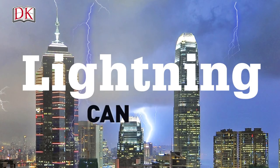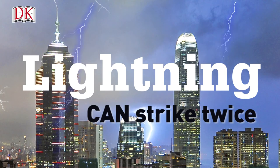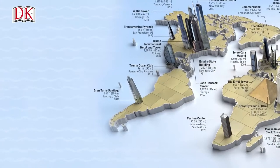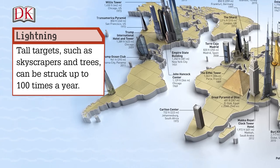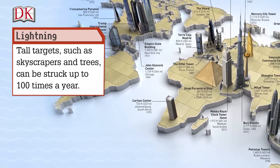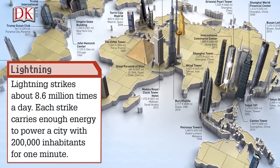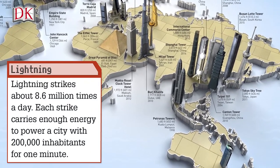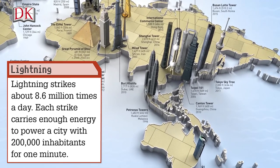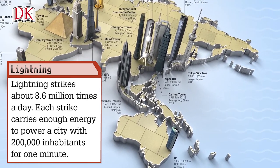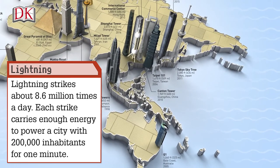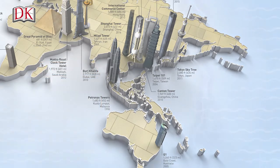Lightning can strike twice. Tall targets, such as skyscrapers and trees, can be struck up to 100 times a year. Lightning strikes about 8.6 million times a day. Each strike carries enough energy to power a city with 200,000 inhabitants for one minute.